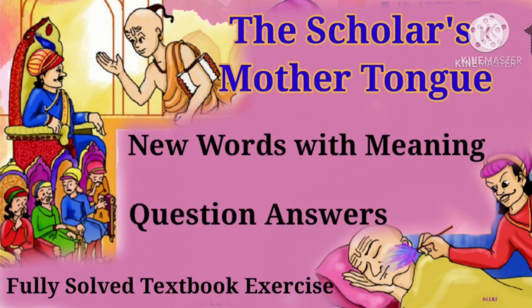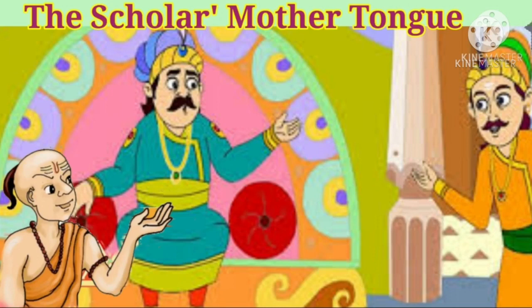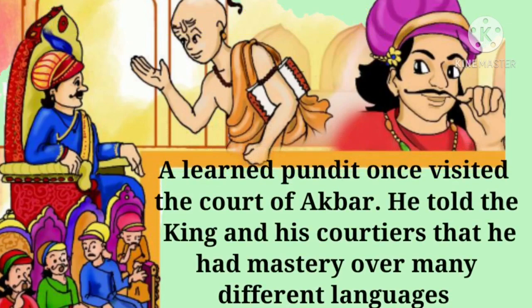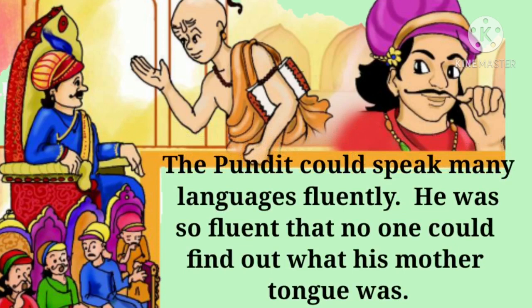This story is about King Akbar, a priest who visited his court, and of course Birbal, the famous minister of King Akbar's court. Let us start the story — 'The Scholar's Mother Tongue.' A learned pundit once visited the court of Akbar. He told the king and his courtiers that he had mastery over many different languages. The pundit could speak many languages fluently, so fluently that no one could find out what his mother tongue was.